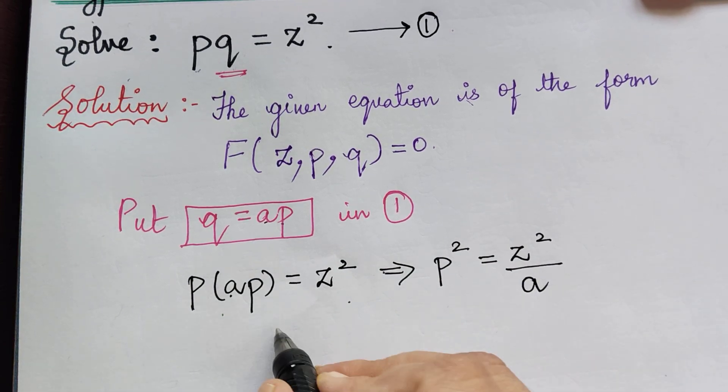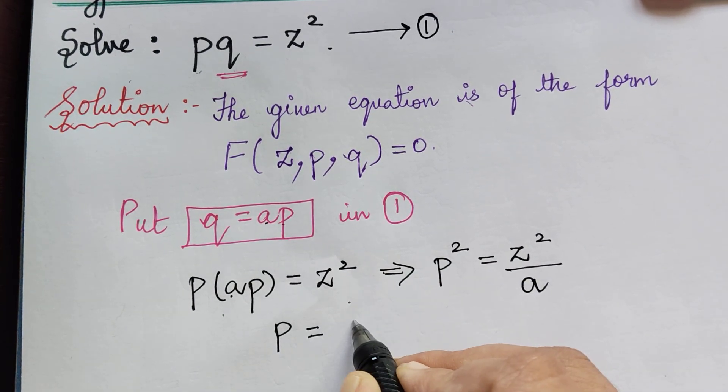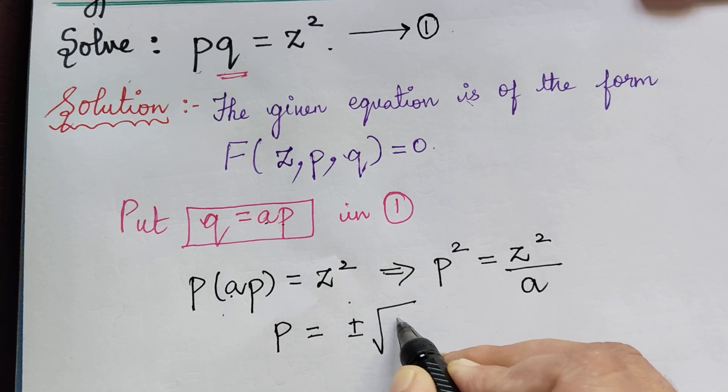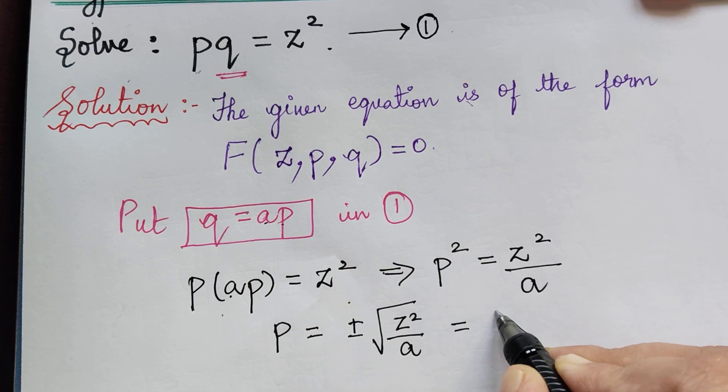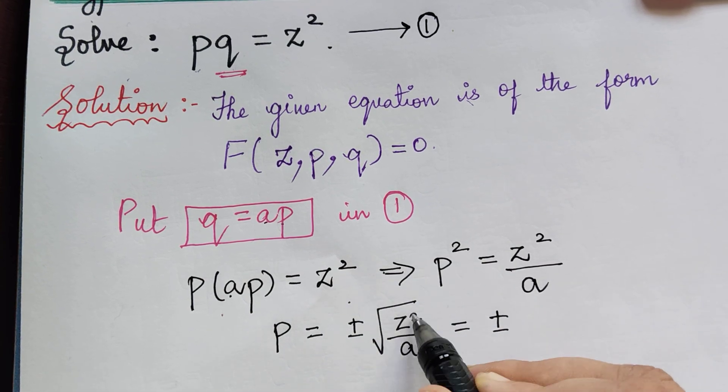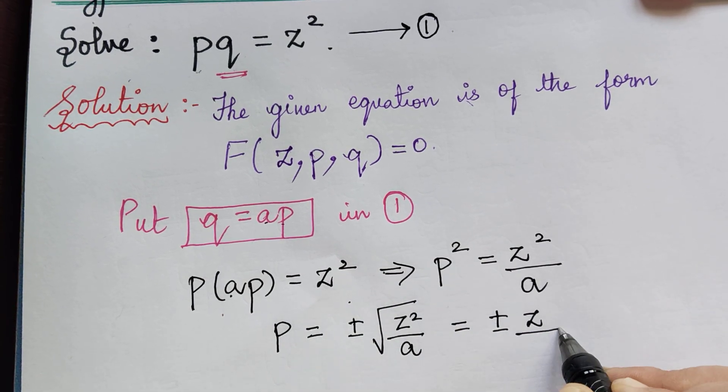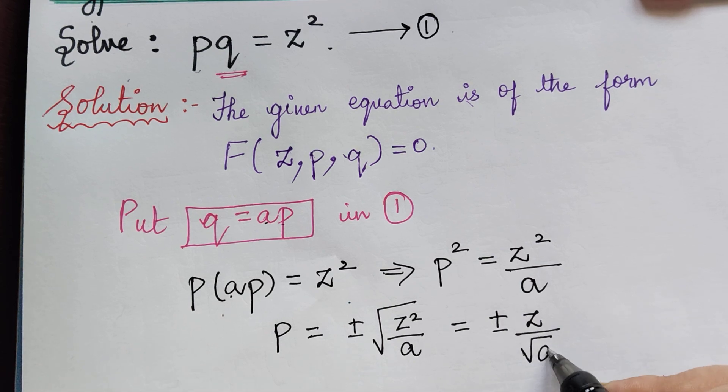The value of P will be ± √(Z²/A). That equals ± Z/√A.